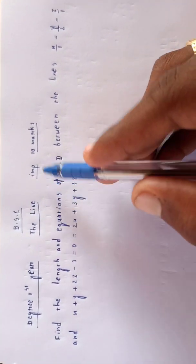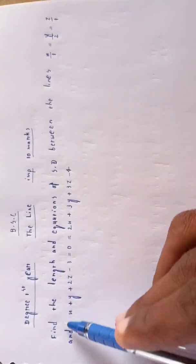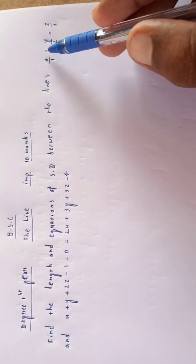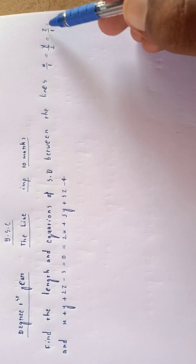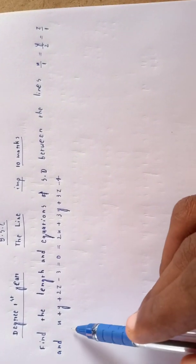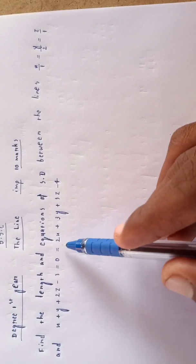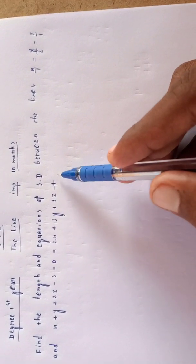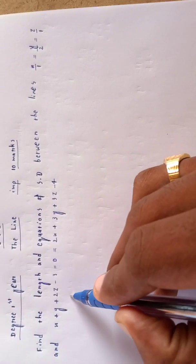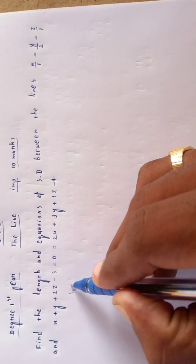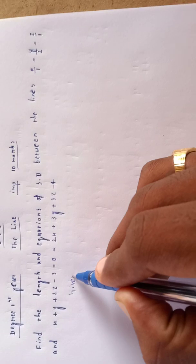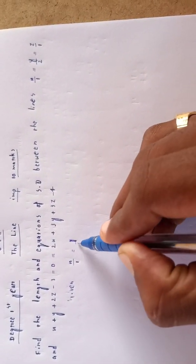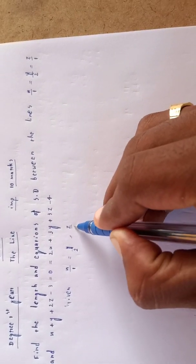Welcome to my channel BSc. The problem is to find the length and equations of the shortest distance (SD) between the lines. Line L1: x/1 = y/2 = z/1, and line L2 given by the intersection of planes x+y+2z-3=0 and 2x+3y+3z-4=0.